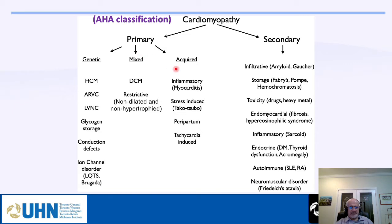Primary cardiomyopathy can be mixed or acquired. Acquired causes include inflammatory myocarditis — one of the main causes leading to dilated cardiomyopathy — such as COVID-induced myocarditis, or Chagas disease, which is a type of dilated cardiomyopathy due to myocardial involvement. Stress-induced Takotsubo cardiomyopathy is also included. Secondary cardiomyopathy means another disease created it — like amyloidosis, storage disease, toxicity, hypereosinophilic syndrome, sarcoidosis, endocrine diseases, and others.